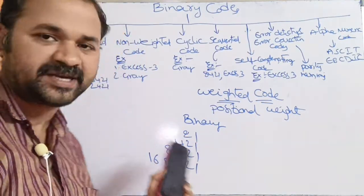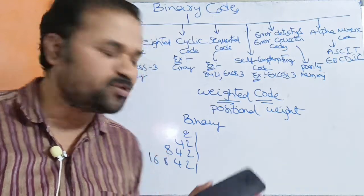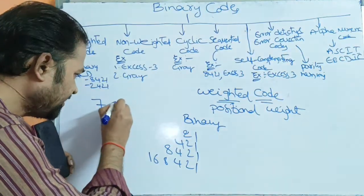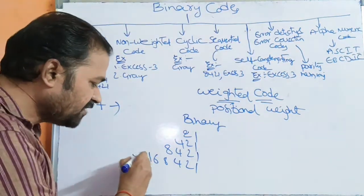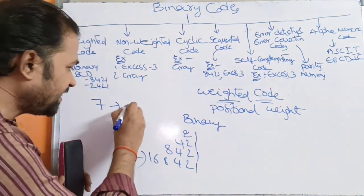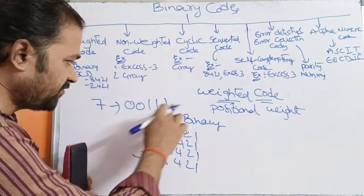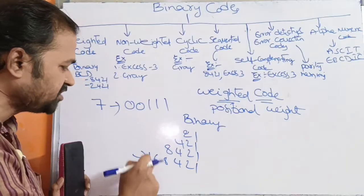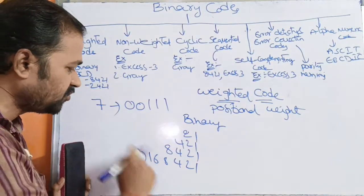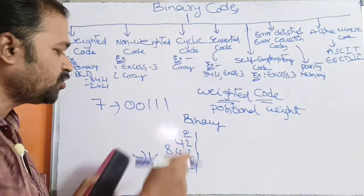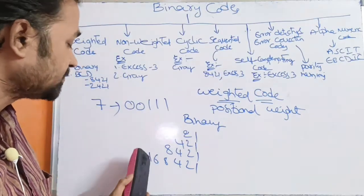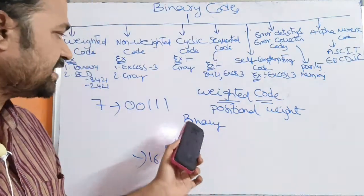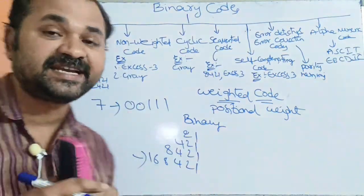Here the corresponding value depends upon the positional weight. Let us take the example of 7. Let us represent 7 using a 5-bit binary number. Then we can write it as 0 0 1 1 1. Here in place of 16 we have 0, in place of 8 we have 0, and next for 4 2 1 means 1 1 1. So 0 plus 0 plus 4 plus 2 plus 1 is nothing but 7.